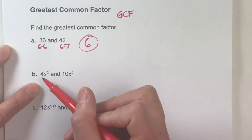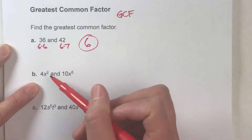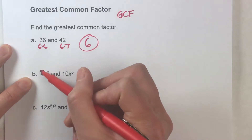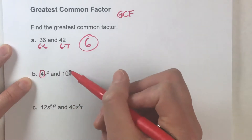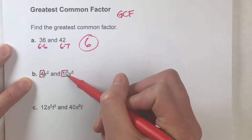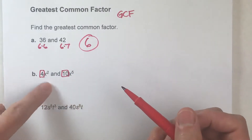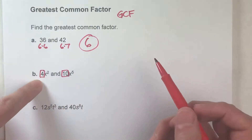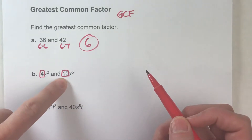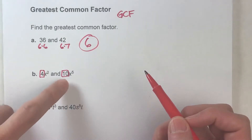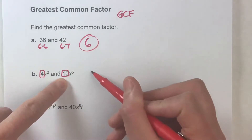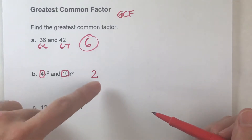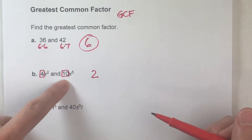For example, 4x squared and 10x to the 5th power. Let's start with just the numbers first. If you've got 4 and 10, what's the biggest number that divides into both? It's 2, because 2 times 2 is 4, and 2 times 5 is 10.